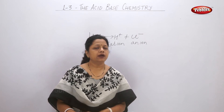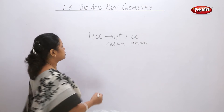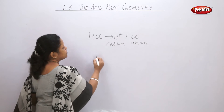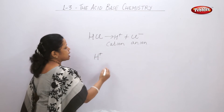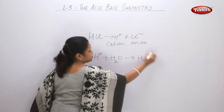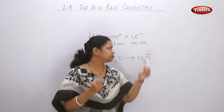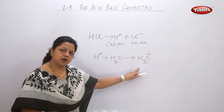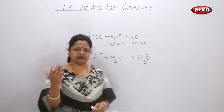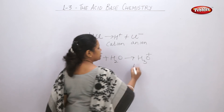If HCl is in the gaseous form, it cannot ionize at all. When HCl is present in water, the hydrogen ions react with water to form a hydronium ion. This hydronium ion carries the electric current or the positive charge. Hydronium ion is formed by water reacting with the hydrogen ion from any acid, forming an ion called the hydronium ion.